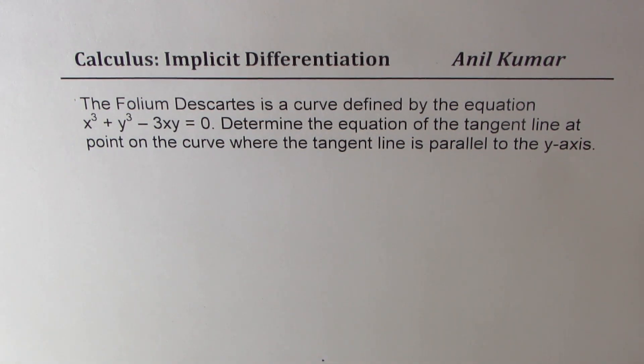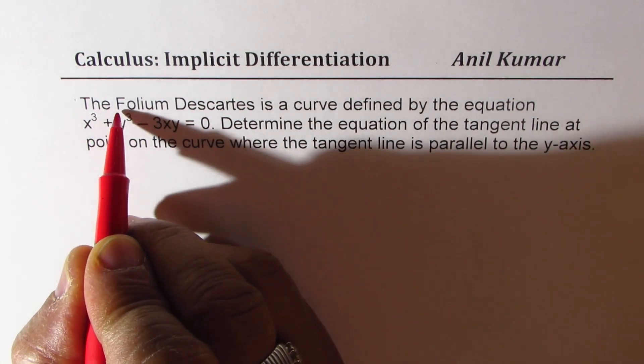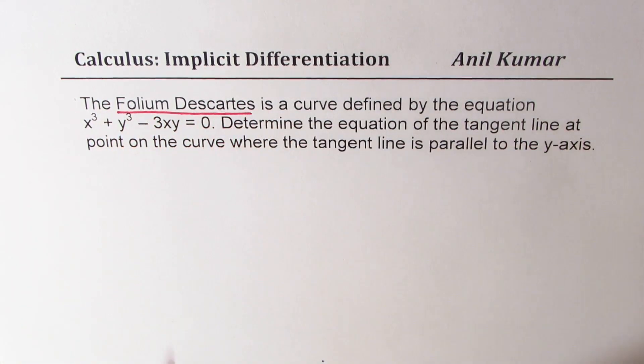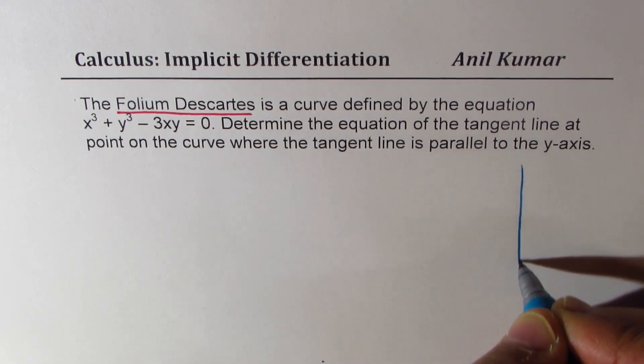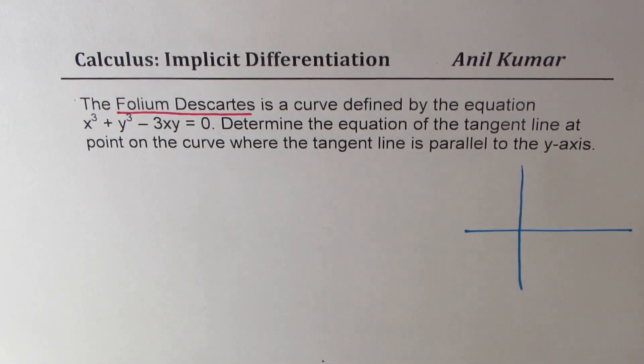Determine the equation of the tangent line at point on the curve where the tangent line is parallel to the y-axis. So let's talk about the equation for a moment. Folium really means leaf.